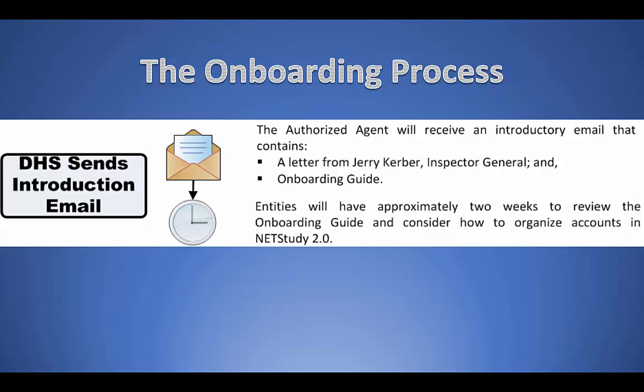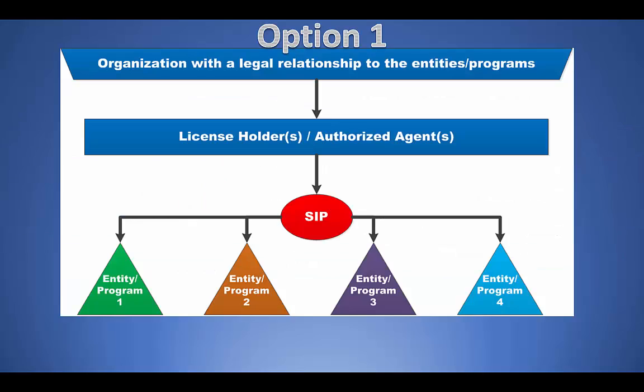For single entities, the authorized agent will designate a sensitive information person for their entity. However, for organizations with multiple entities, the new NetStudy 2.0 system offers more flexibility in how background study determinations of workers and volunteers may apply to your organization. The authorized agent or agents are responsible for designating background study sensitive information persons for each entity. A person may be the SIP for one or more entities owned or operated by the same organization, or there may be one SIP per entity, or a combination of these options as shown in the next three diagrams. The diagrams show an organization with a legal relationship to four entity programs represented as triangles, and an animated figure named George who represents an employee of the organization.